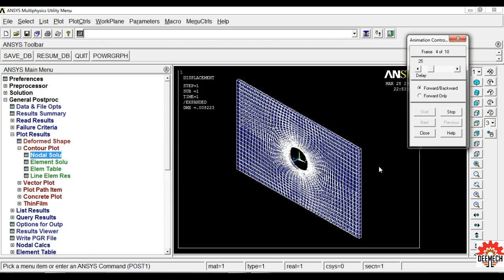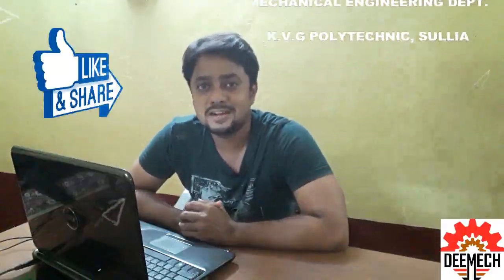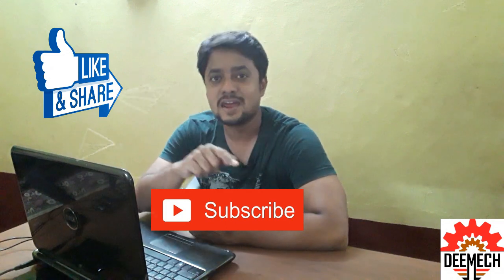This is the stress acting on the element due to the applied force. To compare: the theoretical value is 166.66 Newton per mm square and the ANSYS value is 162.404 Newton per mm square. This is the conclusion for this problem. With this we have completed the solution. If you like this video, please comment, like, share, and subscribe. We'll meet in the next video — thank you for watching.